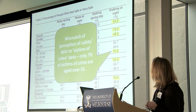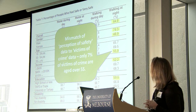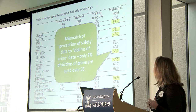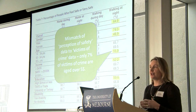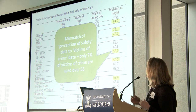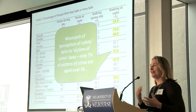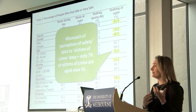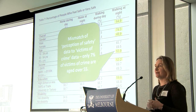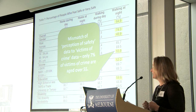People aged over 55 showed the greatest level of fear. But at that community safety day, we showed a mismatch between the perception of safety and actual victims of crime data — for the whole state, only 7% of crime victims are aged over 55. They have a real fear that may not be matched by reality, and it's important to get that message out, as this could be affecting social isolation and various other issues.